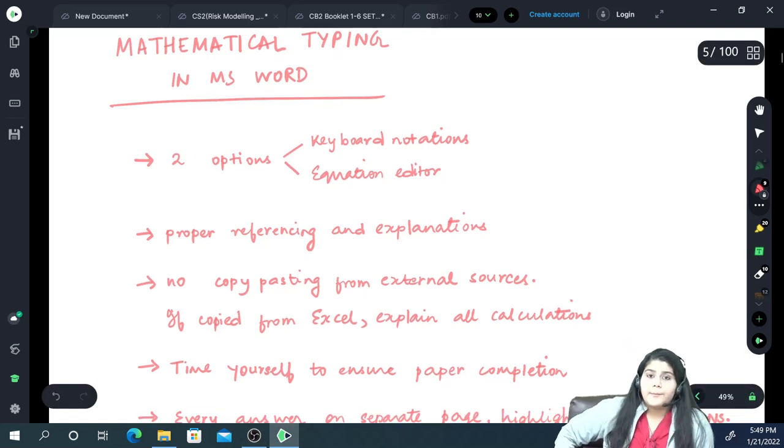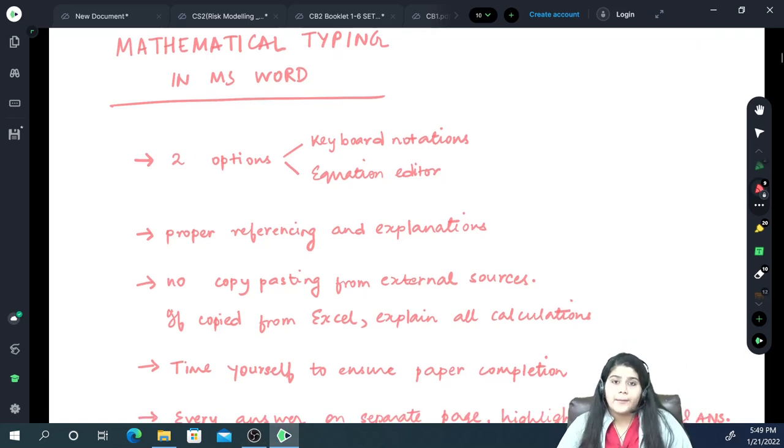While typing on MS Word for papers like CB1, CB2, it's not as difficult because here the only criteria is fast typing speed and knowing your syllabus. However, in other papers and in some very small places in CB1, CB2 as well, you will be required to solve full-fledged sums on MS Word. So now the main thing is, how do we do that?